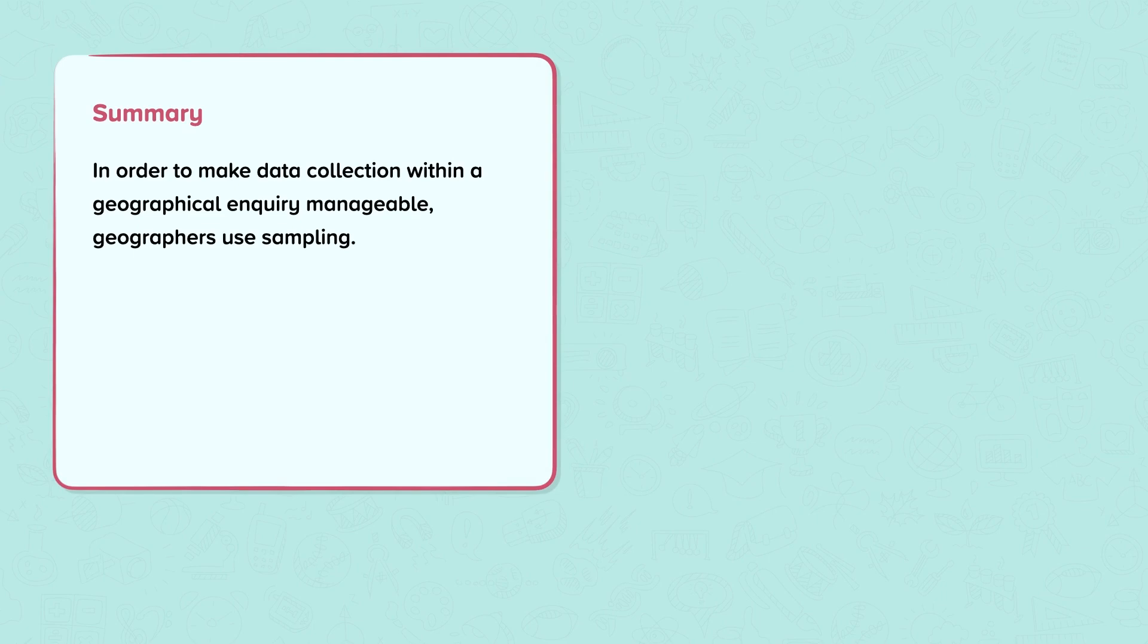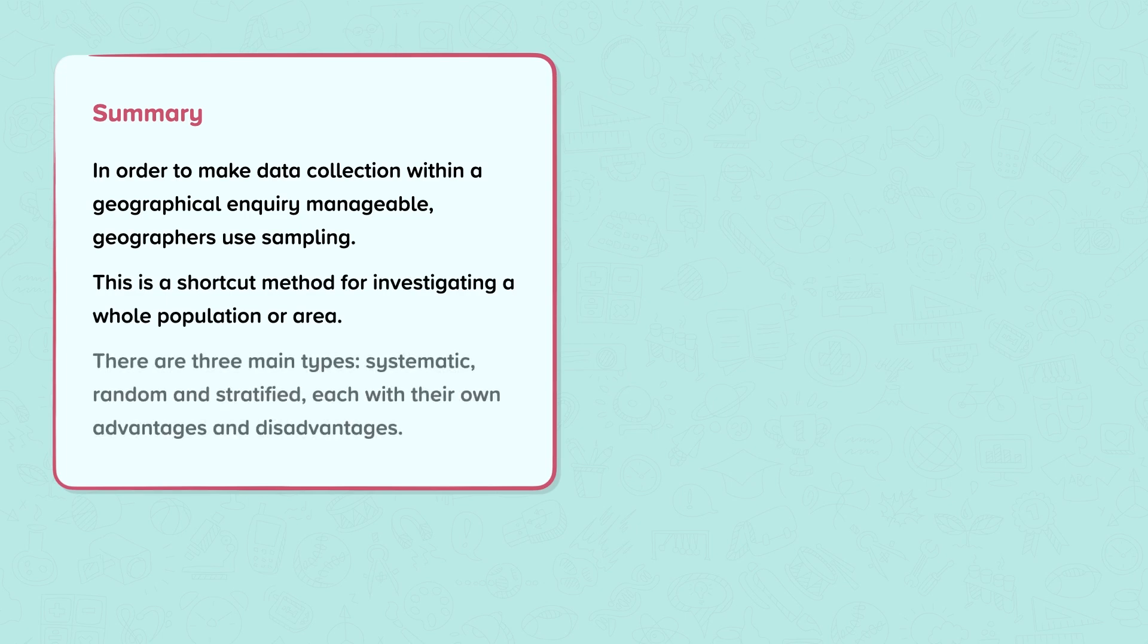Summary. In order to make data collection within a geographical inquiry manageable, geographers use sampling. This is a shortcut method for investigating a whole population or area. There are three main types: systematic, random, and stratified, each with their own advantages and disadvantages.